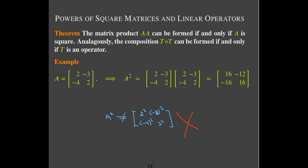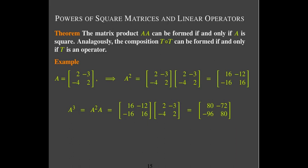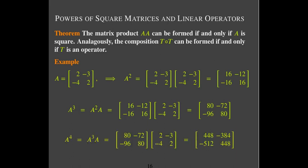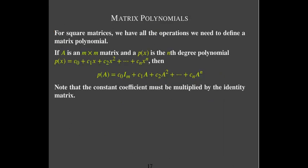From there, if you have A squared you can multiply it times A again to get A cubed, then multiply A cubed times A to get A to the fourth, and so on. So you can form powers of A, and using those properties we can actually define a matrix polynomial.